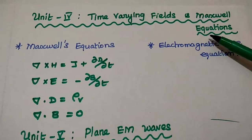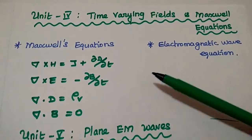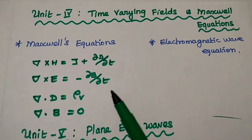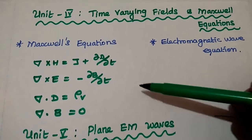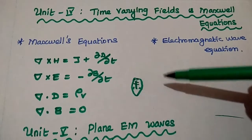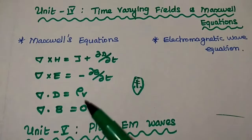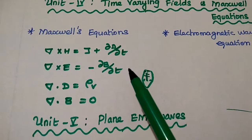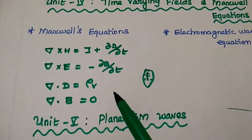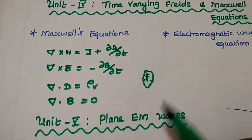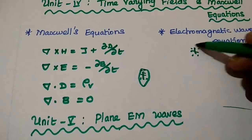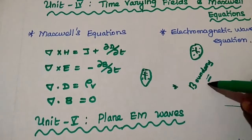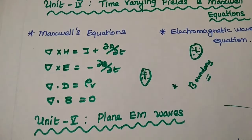The fourth unit is Maxwell's equations. The unit is divided into two halves: Maxwell's equations and the electromagnetic wave equation. All four Maxwell's equations are very important — expect at least one question on deriving them and their significance. The first equation comes from Ampere's Circuital law, the second from Faraday's law, the third from Electric Gauss's law, and the fourth from Magnetic Gauss's law. The electromagnetic wave equation derivation and the boundary conditions for electromagnetic waves — combining both electric and magnetic field boundary conditions — are also important.